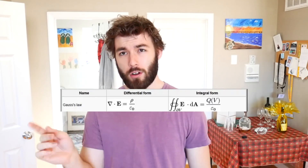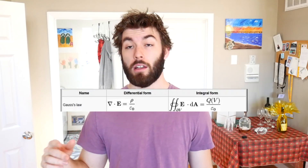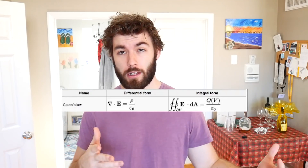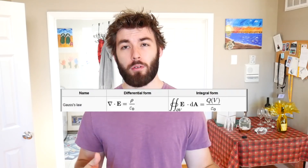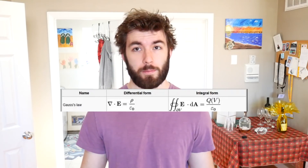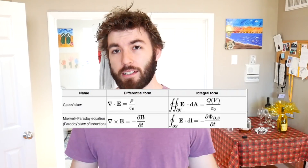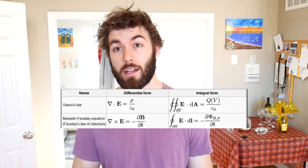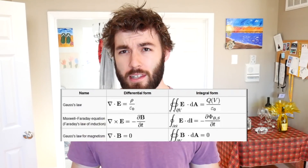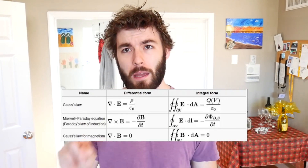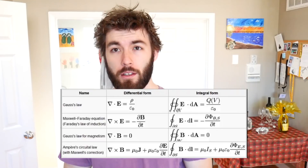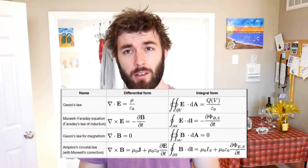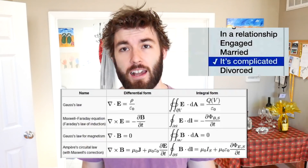The first equation says that if you draw lines to represent how strong an electric field is — more lines corresponding to a stronger field — then those lines are proportional to how much charge there is. The second equation says that a changing magnetic field creates an electric field. The third equation says that if you break a magnet in half, you get two magnets. And the fourth equation says that there's a relationship between the magnetic field and the electric current, and it's complicated.